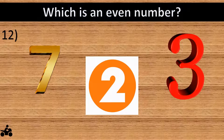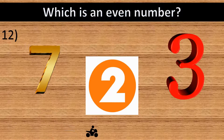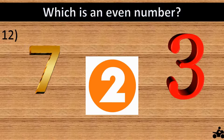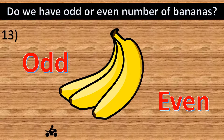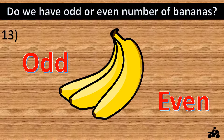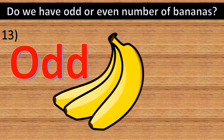Question number twelve: which is an even number? The answer is two. Question number thirteen: do we have an odd or even number of bananas? The answer is odd — three is an odd number.